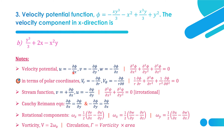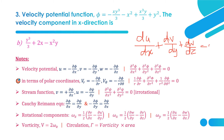The equations are: u = −∂φ/∂x, v = −∂φ/∂y, and w = −∂φ/∂z. Using the continuity equation for incompressible flow — ∂u/∂x + ∂v/∂y + ∂w/∂z = 0 — and substituting the velocity potential functions, we get the Laplace equation: ∂²φ/∂x² + ∂²φ/∂y² + ∂²φ/∂z² = 0.